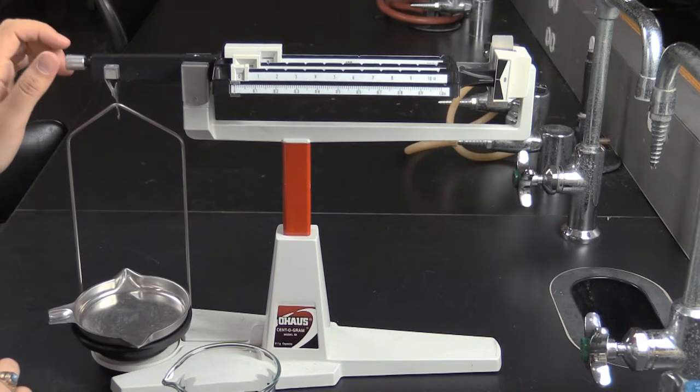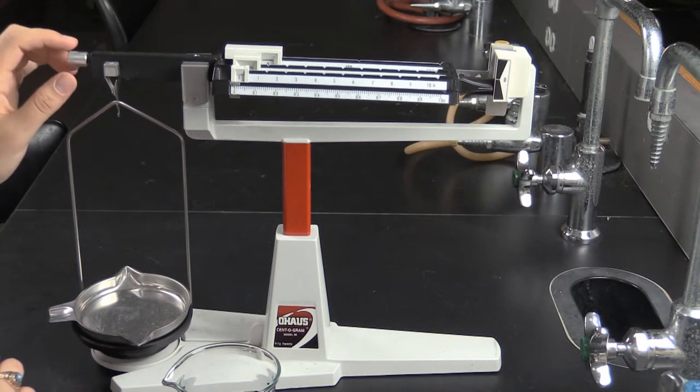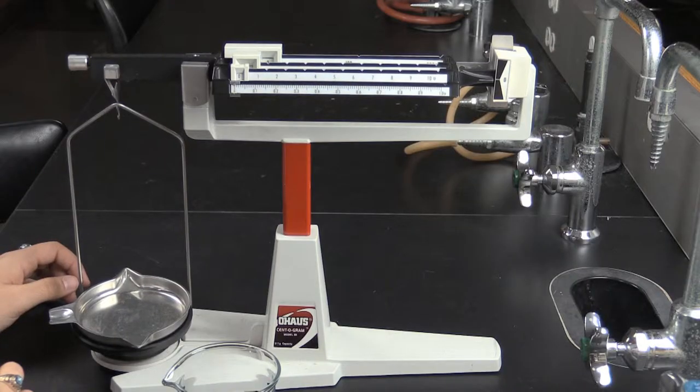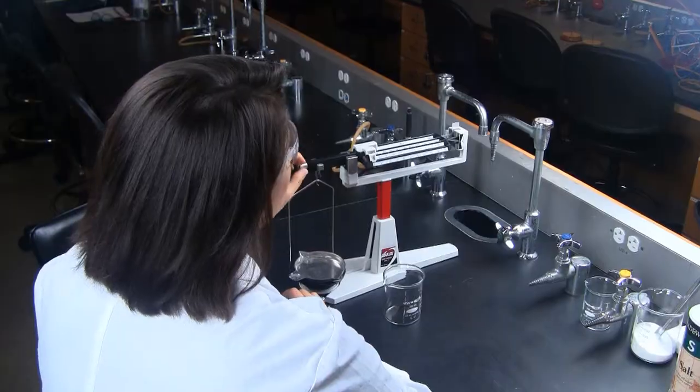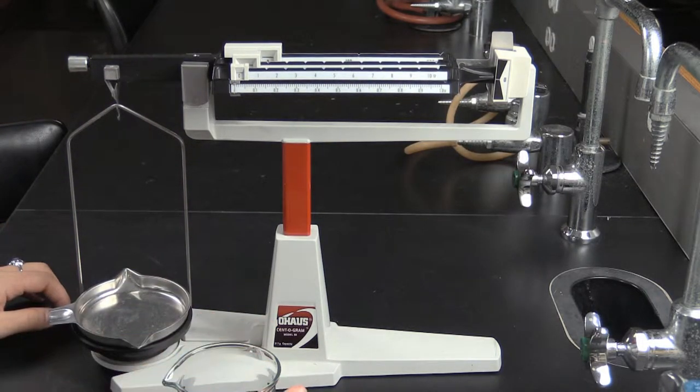This will take a bit of back and forth until you get it just right. To adjust the beam side up, loosen the nut, turn counter-clockwise. Righty tighty, lefty loosey. To adjust down, turn it in the opposite direction.